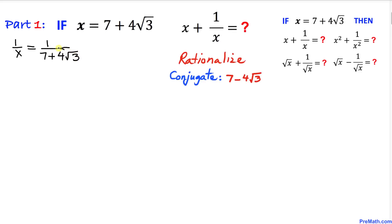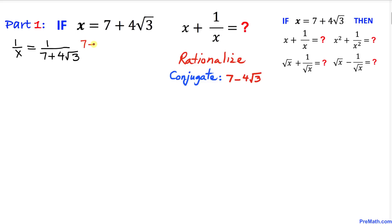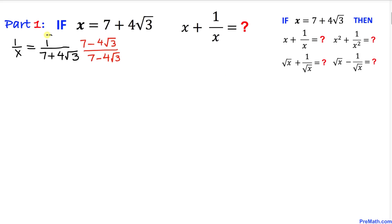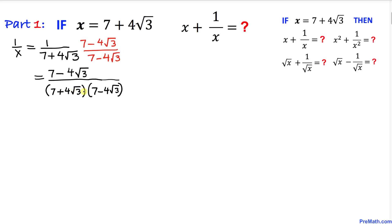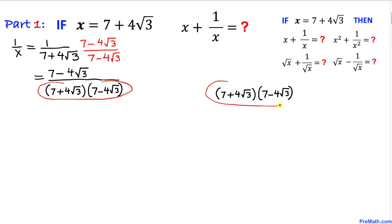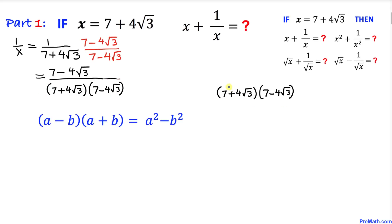We can see that we have radicals in the denominator, so we are going to rationalize the denominator by multiplying by its conjugate, which is 7 minus 4 times square root of 3. We multiply and divide by this conjugate. At the numerator we get 7 minus 4 times square root of 3, and at the denominator we multiply these two binomials.